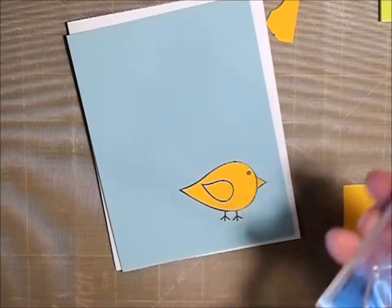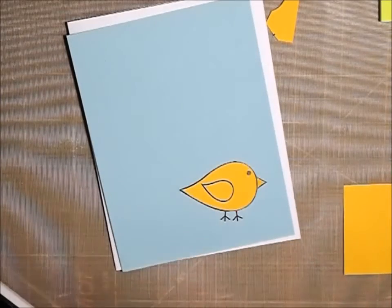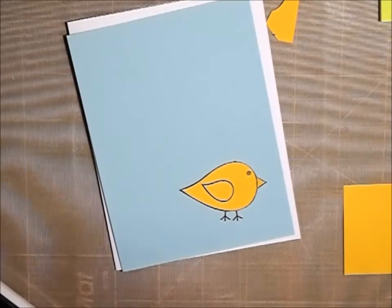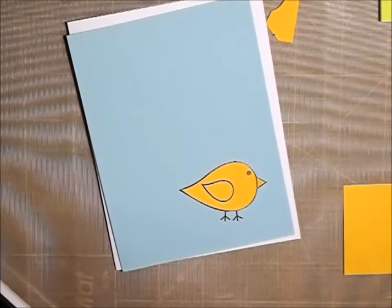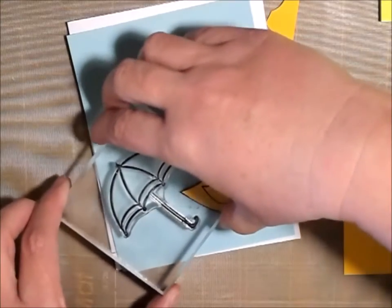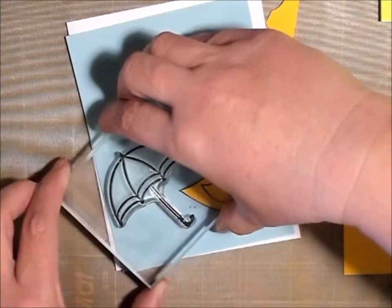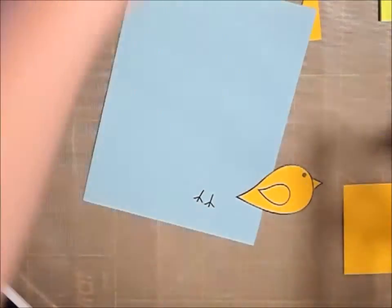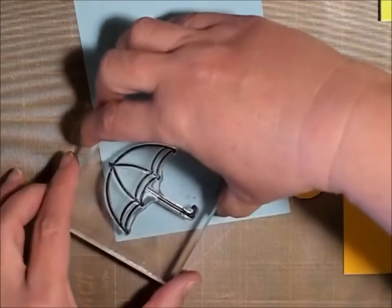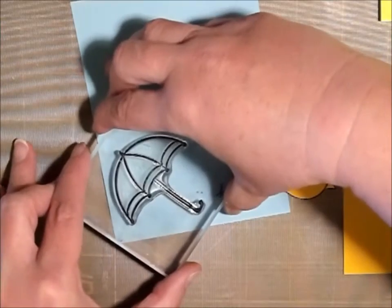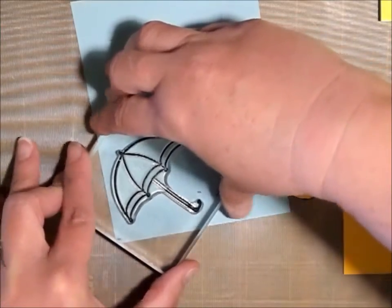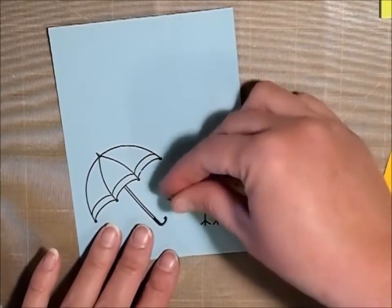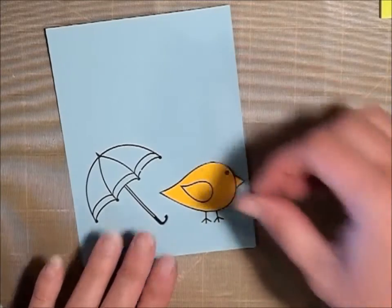Now I have the umbrella so I'm just going to pop him down. But I kind of want it at a turn because I don't want him under the umbrella, or not much. It's okay if he is a little bit. So now I'm just going to glue him down.